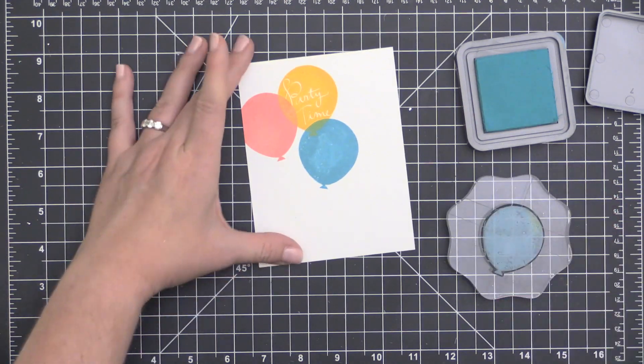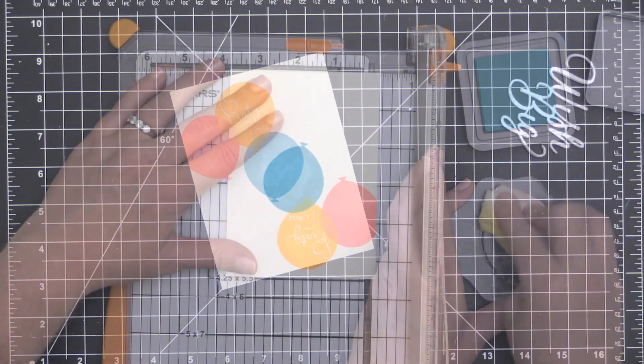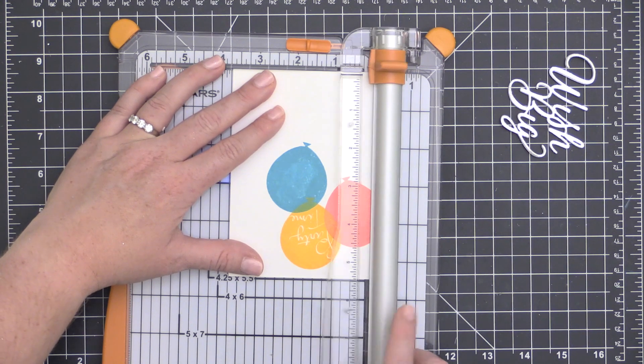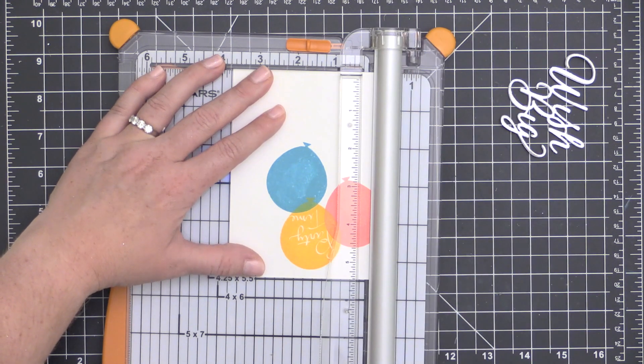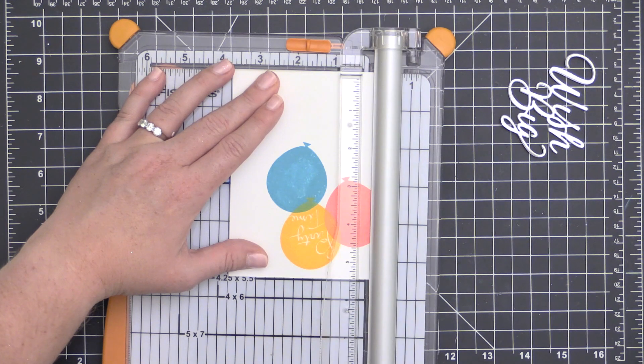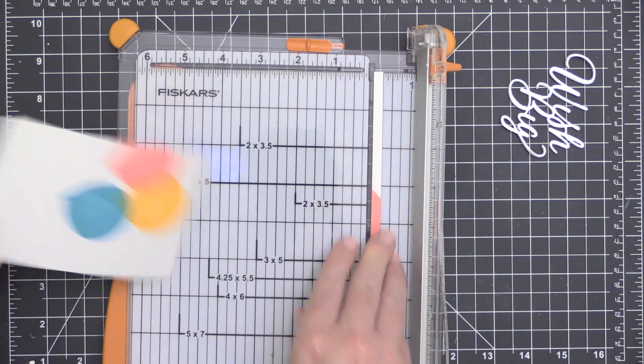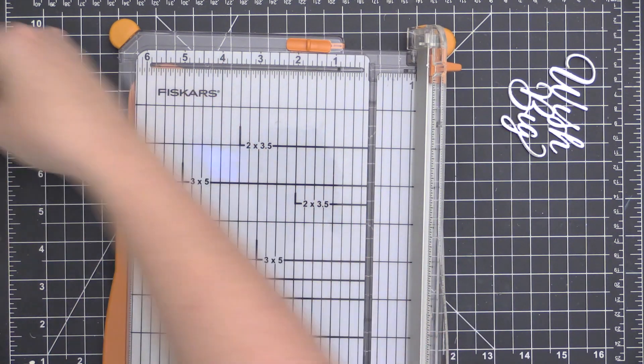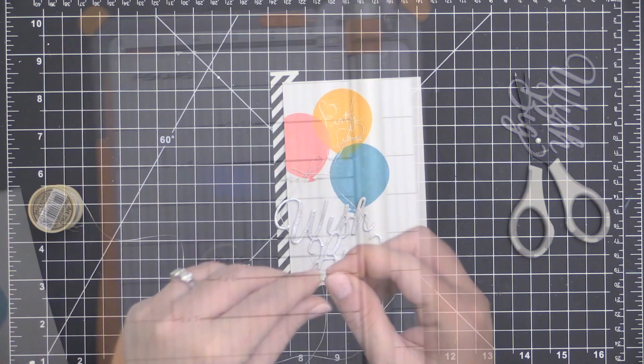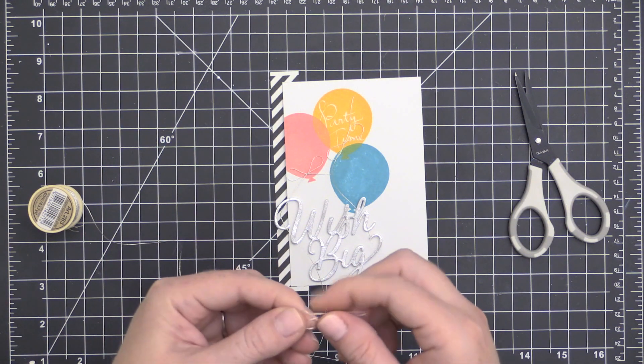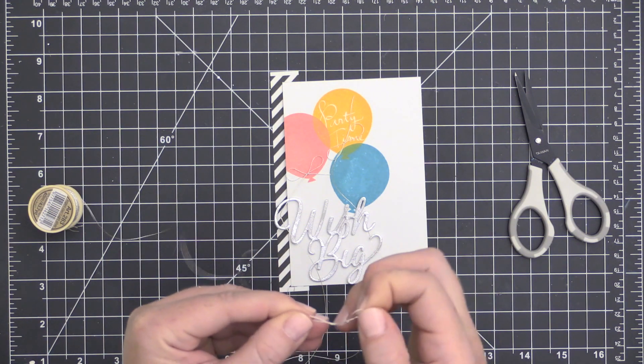But for now, I'm just going to get all of these stamped and then allow it to dry a bit and then take it over to my trimmer. I'm going to cut a quarter of an inch off of each side of this front panel here. The original panel was cut to four and a quarter by five and a half. So this is going to end up being a three and three quarter inch by five and a half inch panel.